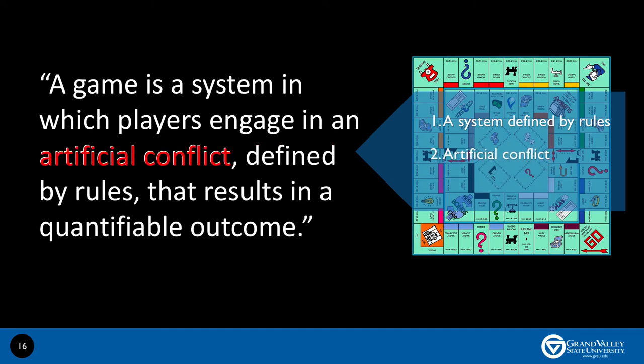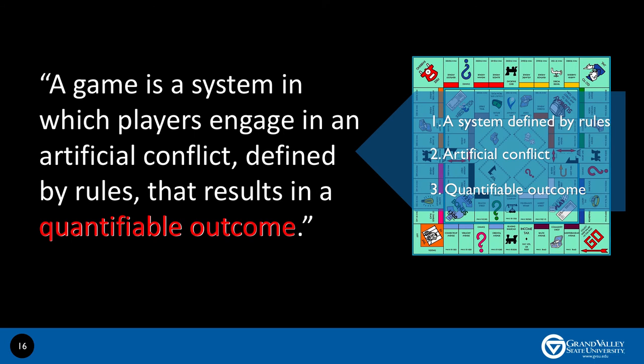The second element of a game is players are engaged in some type of artificial conflict. In Monopoly, for example, players are competing with each other to get as much wealth as possible or to go around Go again and again without going broke. And this gives us a sense of purpose. And that brings us to the third element of every game: a game should result in a quantifiable outcome. In the case of Monopoly, the winner is the one with the most wealth.